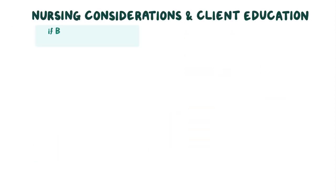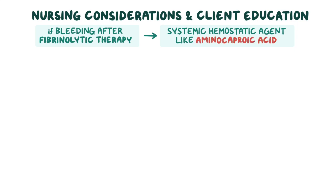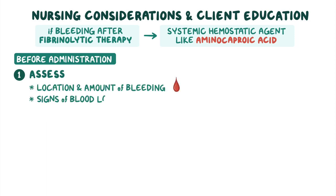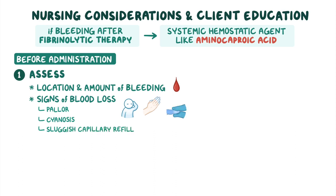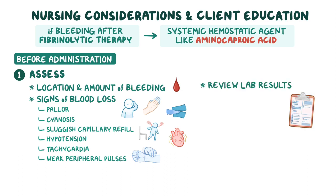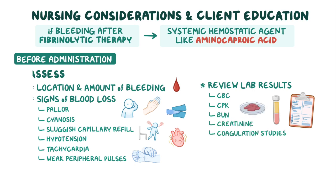If a client is experiencing bleeding after receiving fibrinolytic therapy, they can be prescribed a systemic hemostatic agent like aminocaproic acid. Before administering the medication, assess the location and amount of bleeding, as well as signs of blood loss such as pallor, cyanosis, sluggish capillary refill, hypotension, tachycardia, and weak peripheral pulses.